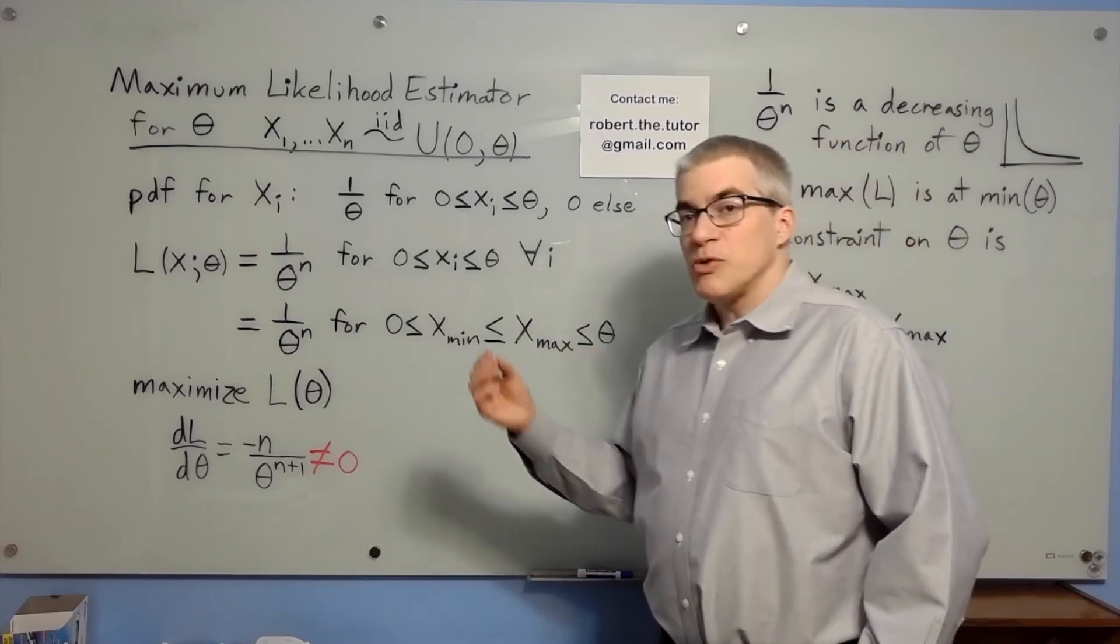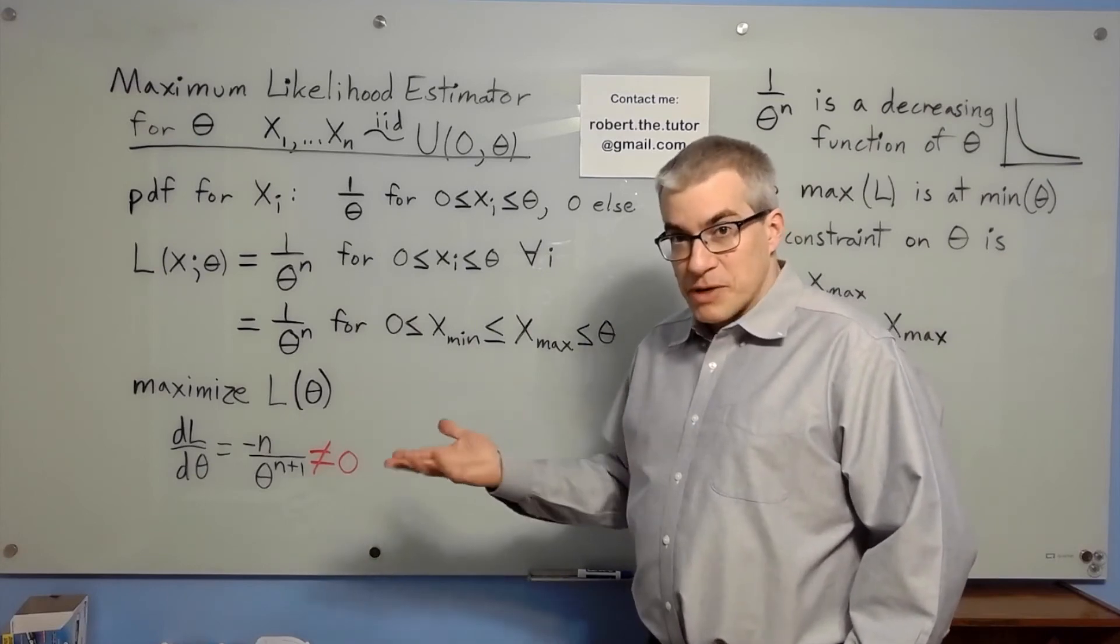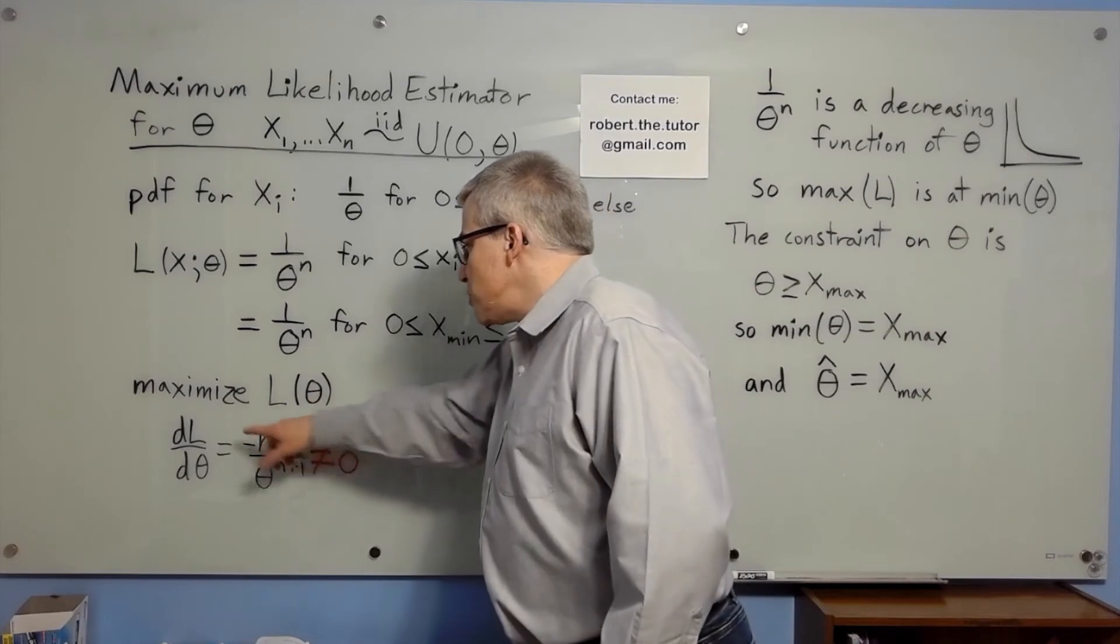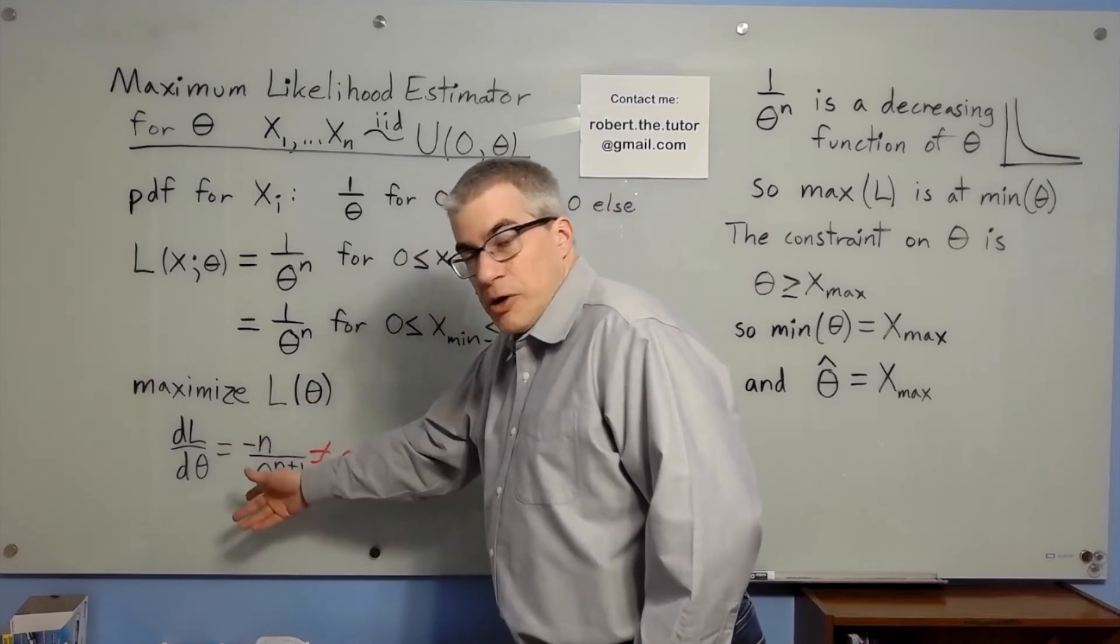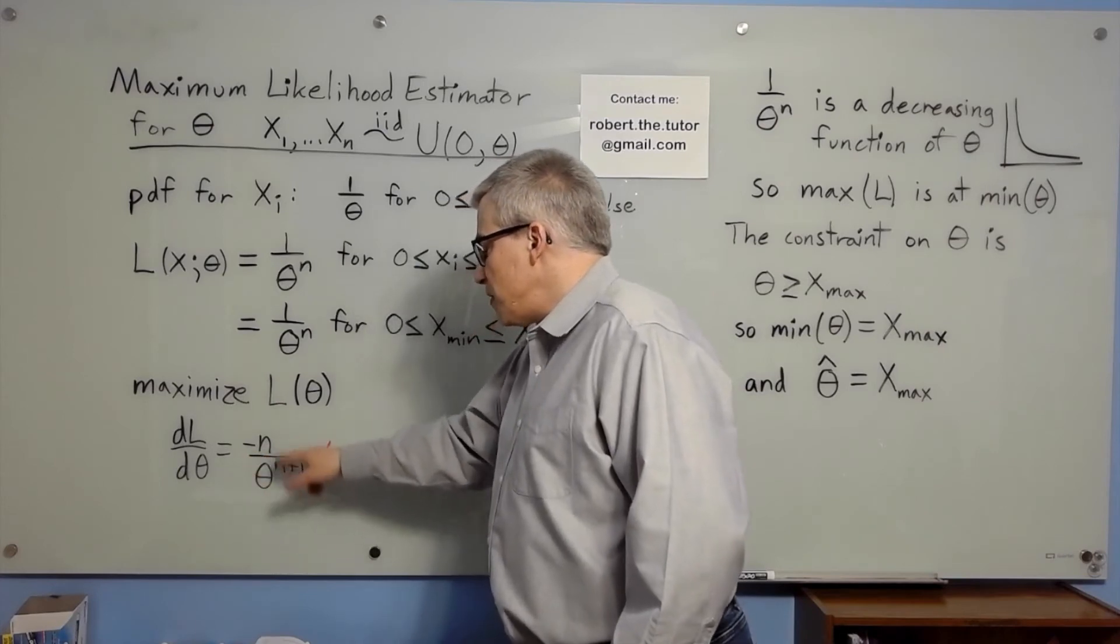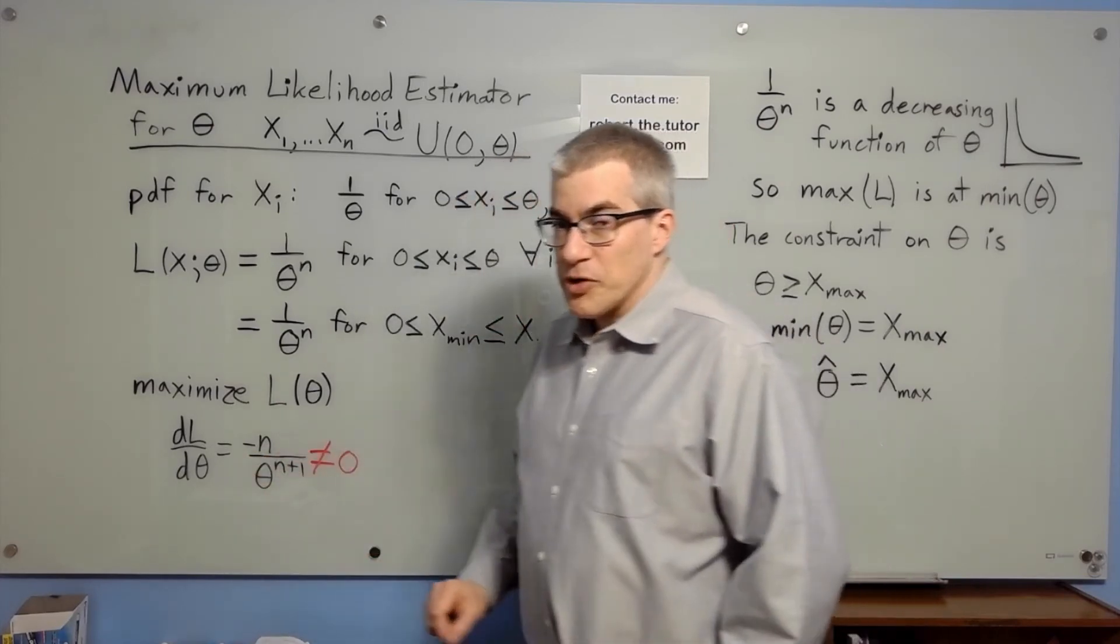To find the maximum likelihood estimator, we want to maximize the likelihood. The usual way of maximizing is to take the derivative and set it to 0. But if we take the derivative of 1 over theta to the n, we get this, which is never 0. So we need another approach.